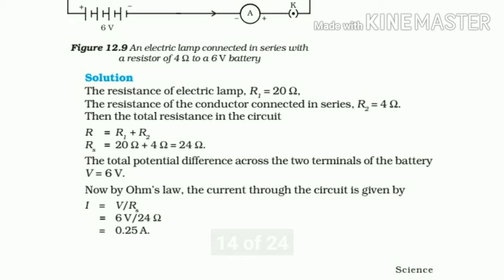Potential difference is 6 volt. By Ohm's law, V equals IR. So I equals V by R, which is 6 divided by 24, equals 0.25 ampere.